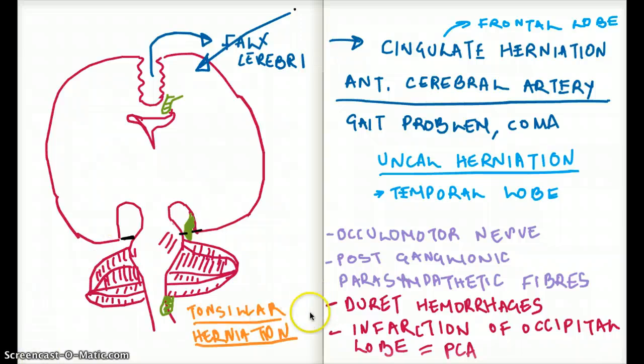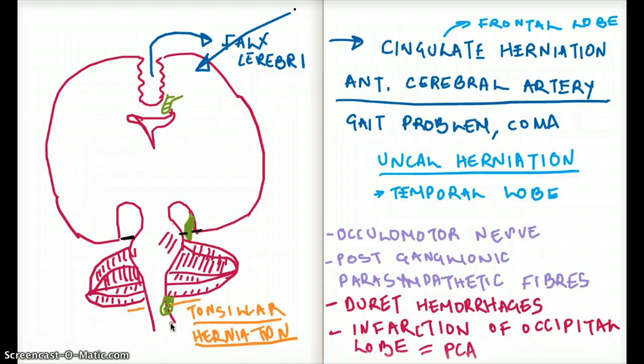Last but not least is tonsillar herniation, the final type. This is when the cerebellar tonsils herniate through the foramen magnum. When these tonsils herniate, they affect the cardiorespiratory centers of the medulla, and we can even die from it if those centers are compressed enough to be life-threatening. Those are all the different types of herniation.